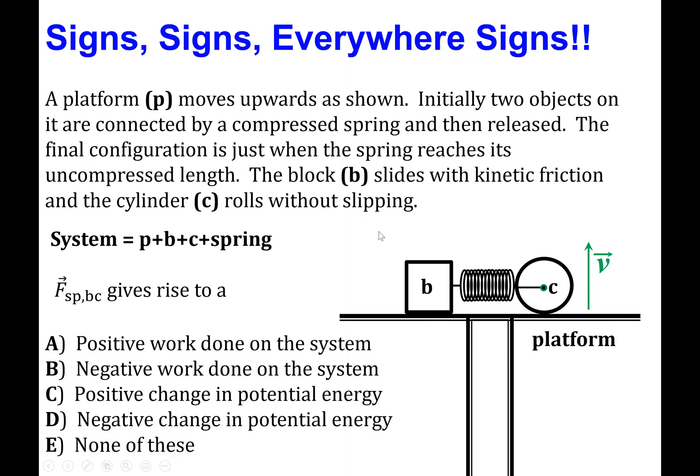So the first question is, let's focus on the force due to the spring that's attached between b and c, but what we want to do is focus on what's happening to c, the cylinder. So the question is, what does this force give rise to? Possibly positive work done on the system, negative work done on the system, positive change of potential energy, or negative change of potential energy, or none of these? So let's stop here for a moment.